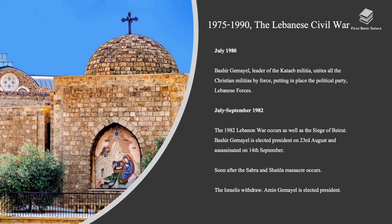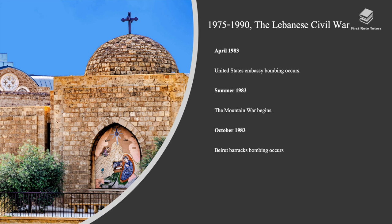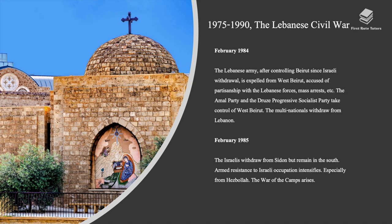Soon after, the Sabra and Shatila massacre occurred. Amin Gemayel was elected president. In April 1983, the United States Embassy bombing occurred. During the summer of 1983, the Mountain War began, and in October 1983, the Beirut barracks bombing occurred. In February 1984, the Lebanese army, after controlling Beirut since Israel's withdrawal, was expelled from West Beirut, accused of partisanship with the Lebanese Forces. The Amin Gemayel Party and the Druze Progressive Socialist Party took control of West Beirut, and the multinational forces withdrew from Lebanon.